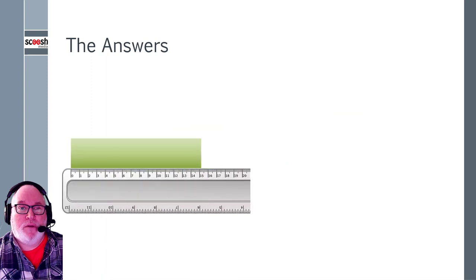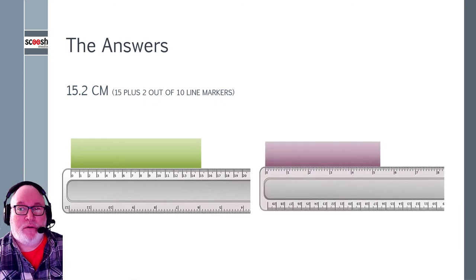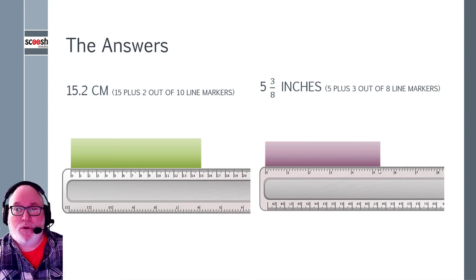So the answers. So let's have a look at the green one first of all. 15.2. So it's 15. You see we're up to the 15 marker. And then you would have counted 1, 2 out the 10ths. So it's a 10th, which is the point and then you get 10ths. And the inches. You see it's past the 5. So it's 5. And how many of them? 1, 2, 3. So if you counted 3, then it would be 3 eighths. So it's 5 and 3 eighths inches.